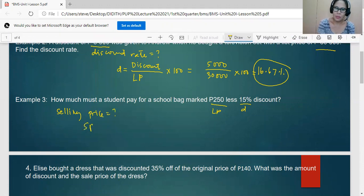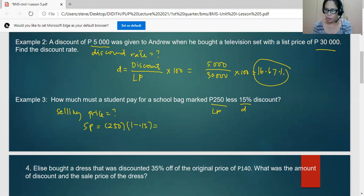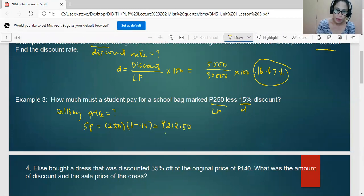Selling price equals list price times the complement of the discount rate. So this is 1 minus 0.15. We have 212.50 as the selling price.